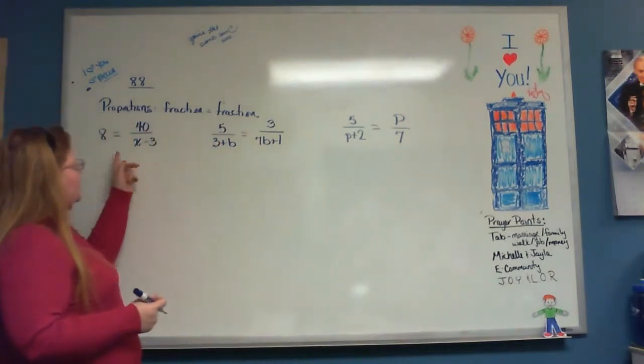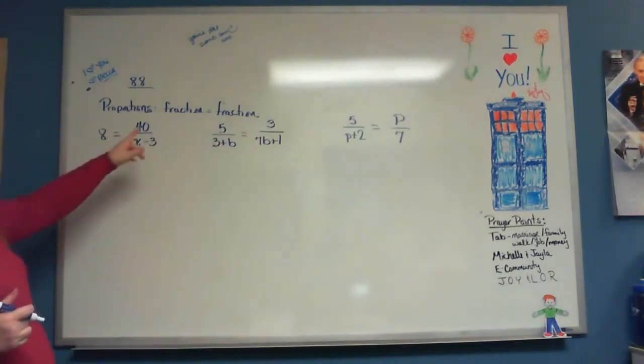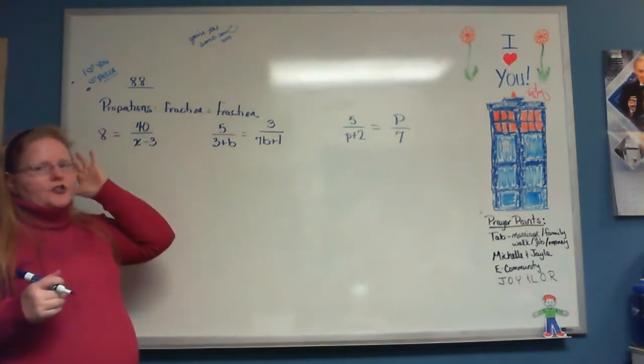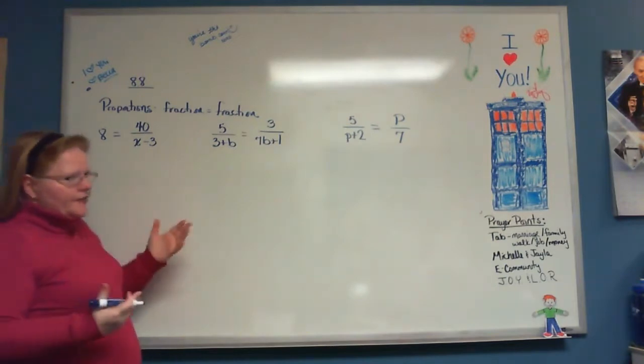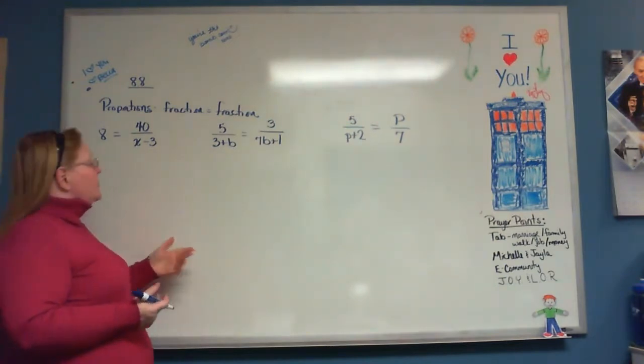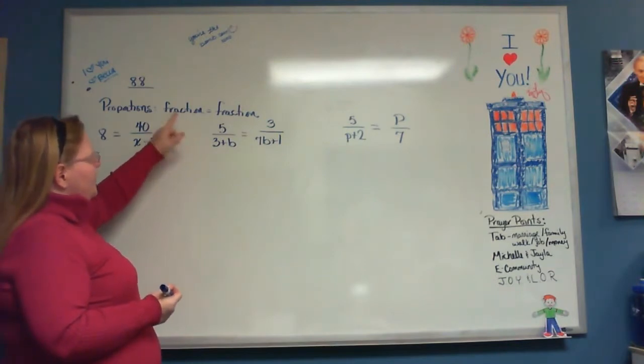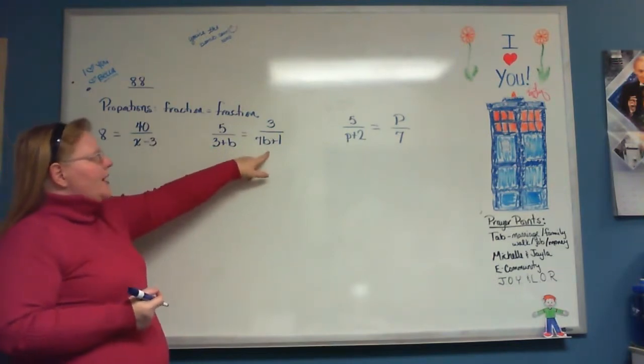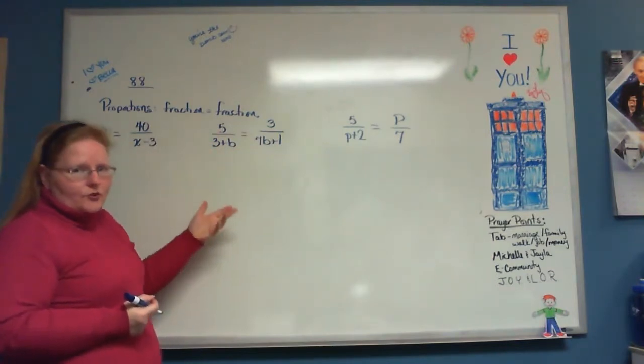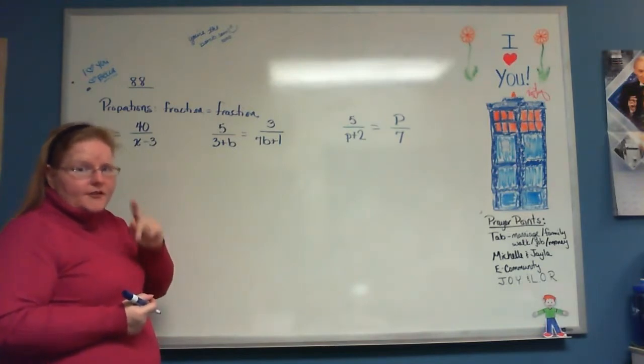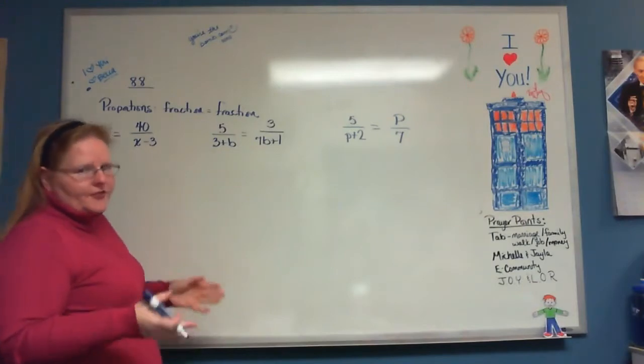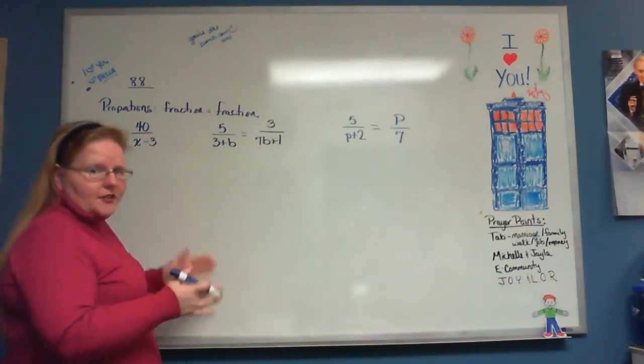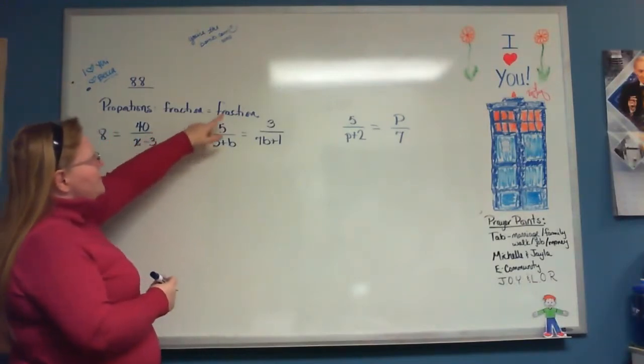So we're going to start with this one right here. First of all, you need to know that a proportion is when you have a fraction equal to a fraction. And when we have a fraction equal to a fraction, there's a very simple way of solving those problems. Anytime we have a fraction equal to a fraction, then you're always allowed to cross multiply. It's the only time you're allowed to cross multiply. Everything else has a different title for it, but cross multiplication is really just when a fraction is equal to a fraction.